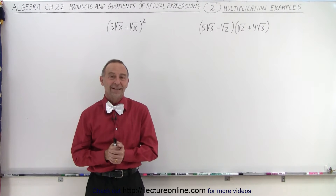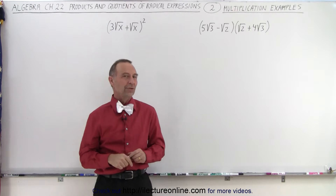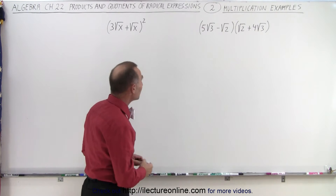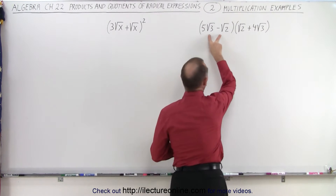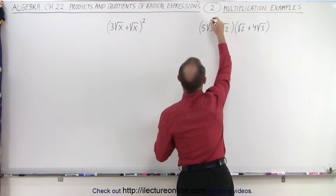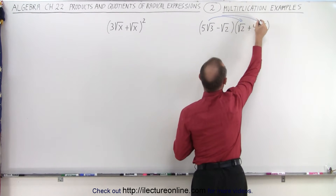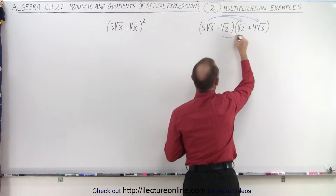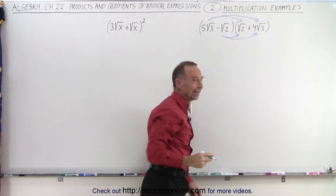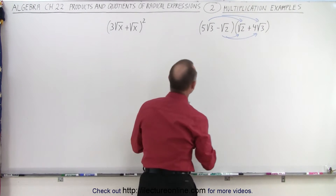Welcome to our lecture online. Now let's try a few multiplications that contain radicals. Again, we use the distributive property, which means that here we have two terms in this binomial and two terms in this binomial. We take the first term and multiply times each of the terms in the second binomial. We take the second term and multiply by each of the two terms in the second binomial. So let's see what that looks like.